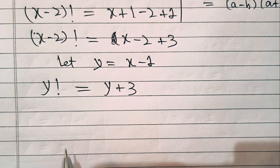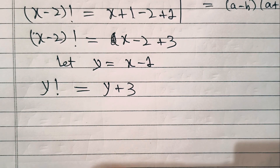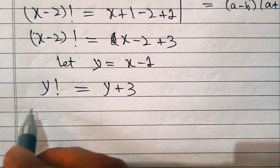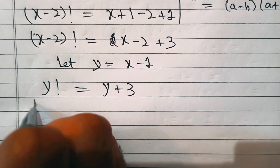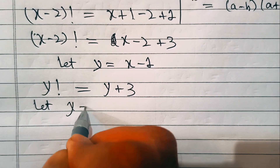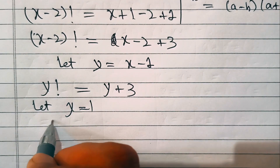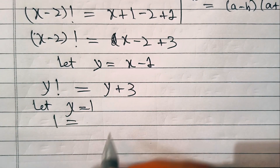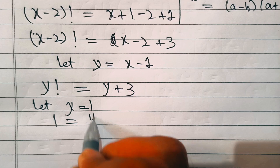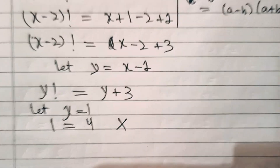We've simplified the problem. Now we'll put in values one by one. If y equals one, the left side is one factorial, which is one, and the right side is one plus three, which is four — so that is not correct.